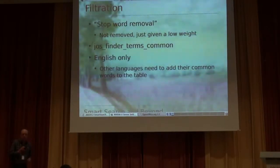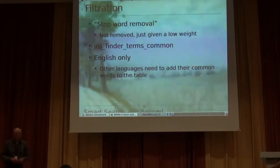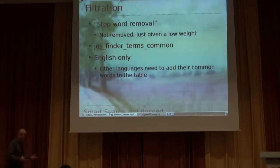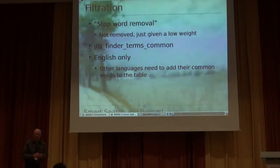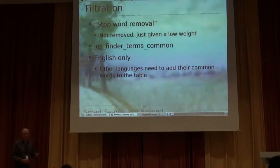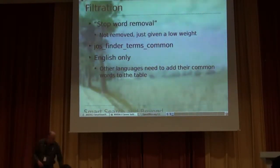At the moment, if you install Joomla 2.5, the common terms table only has English words in it. So if you've got other languages installed on your system and you want to use Smart Search, it's a good idea to try and load that table up with common words in your particular language. We don't really have a mechanism for doing that at the moment, so you have to do it with SQL statements or whatever. That's something else we need to look at.